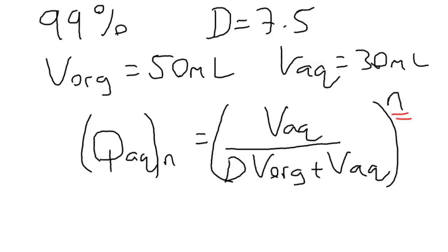So n is actually what we want to solve for. Q in this case is the fraction of the analyte remaining in the aqueous phase. So if we have a 99% efficiency, 99% of all the molecules leave, that means there's 1% left, and as a fraction, that's going to be 0.01.